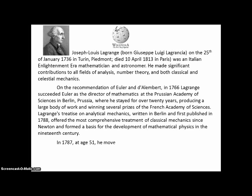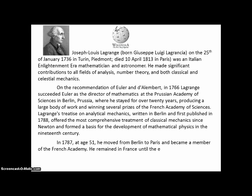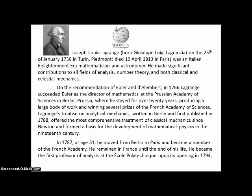In 1787, at the age of 51, he moved from Berlin to Paris and became a member of the French Academy, remaining in France until the end of his life. He became the first professor of analysis at the École Polytechnique upon its opening in 1794, founding member of the Bureau de Longitude, and senator in 1799 — quite an accomplished fellow.